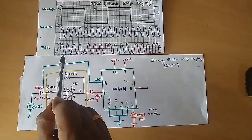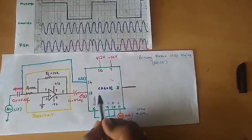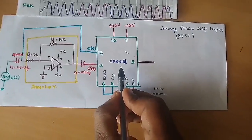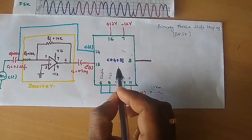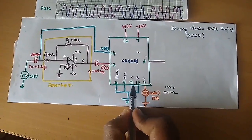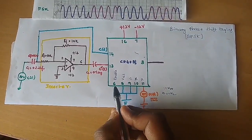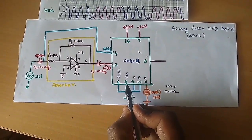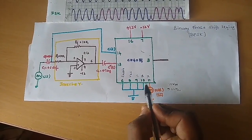To generate a BPSK signal, we are using IC CD4051. IC CD4051 is an analog multiplexer or demultiplexer. The functionality of this IC is explained in the earlier video. Pin numbers 6, 8, 9, and 10 of this IC are connected to ground, where pin 6 is active low enable, pin 8 is meant for ground, and pin numbers 9, 10, and 11 are the control selection inputs.